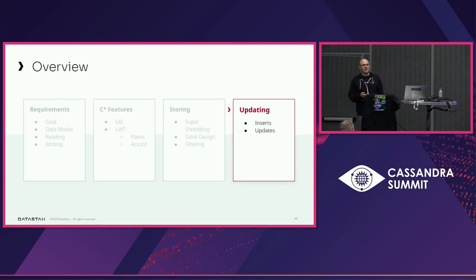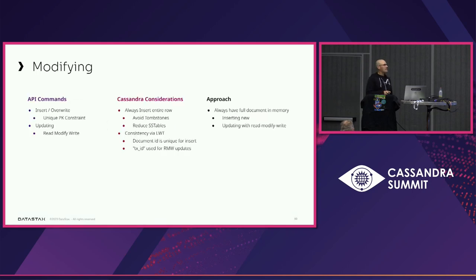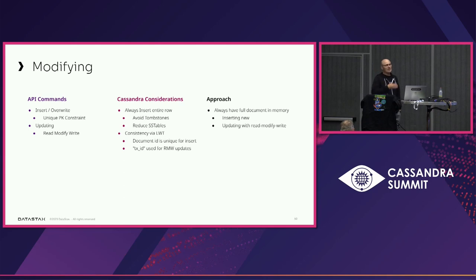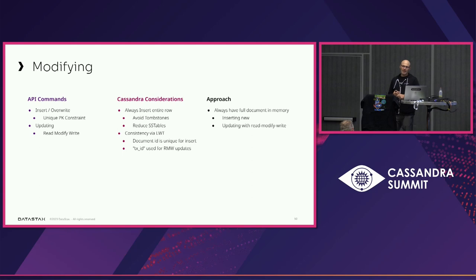So super shredding breaks it all down based on the types of queries we want to serve, then puts a whole lot of pressure on SAI to serve those queries. For updates: we have basic inserts and overwrites and all updates are read-modify-write. In Cassandra, if you want strong linearizable consistency, you can't do it ad hoc — you can't choose per-document whether to do read-modify-write or not. So we always have the document in memory and override every time.